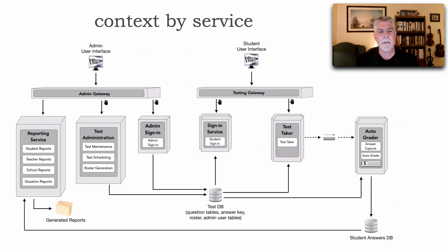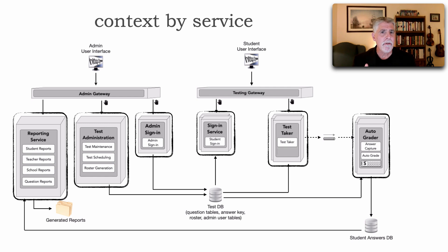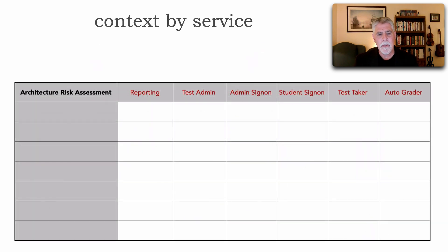If we're to assess risk of this application, one of the ways we can do that is by service where we take each individual service and we assess the overall risk architecturally from that context. And this is what it might actually look like—notice across the top, now we're going to be filling all of this area in with what is the risk, but it's based on the reporting service, the test admin service, admin sign-on, and so forth. Now if we have coarse-grained services this might be a valid way to actually assess overall risk. The problem is when we start to have a lot of workflows that combine various services, especially when those services become more fine-grained.